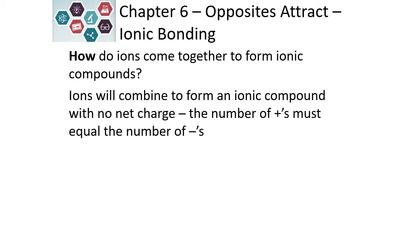How do ions combine to form ionic compounds? They have to have an equal amount of charge, which means that the positive has to equal the negative in order to form a compound. So overall, the charge is zero.